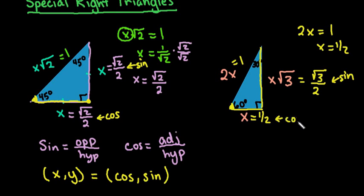And this will be your cosine because of the fact that the hypotenuse is 1.